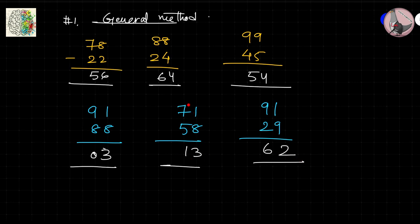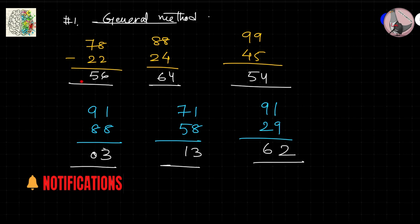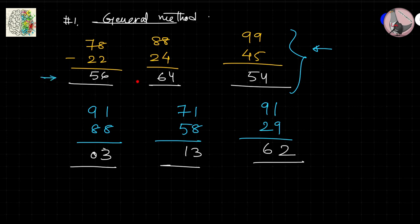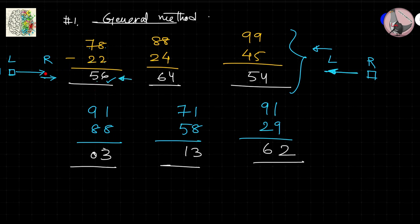For these examples there was no trouble whether you go right to left or left to right. For 78 minus 22: 7 minus 2 is 5, 8 minus 2 is 6, giving 56 — no trouble at all. Similarly for 88 minus 24, from either direction 8 minus 4 is 4 and 8 minus 2 is 6, giving 64 easily.